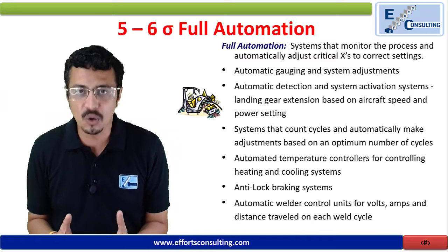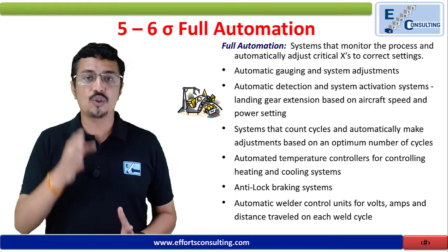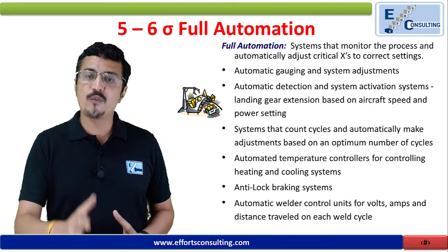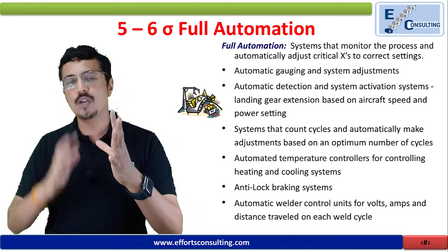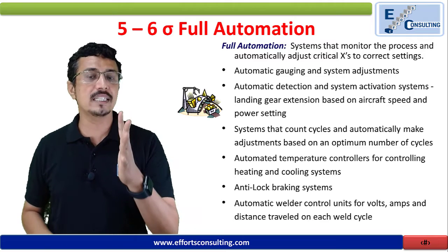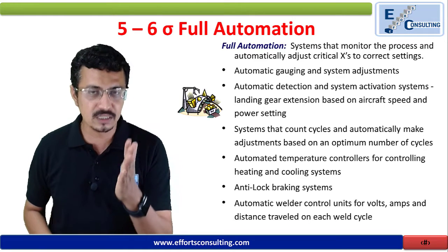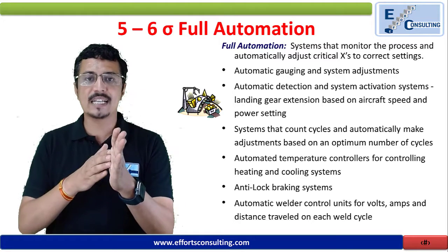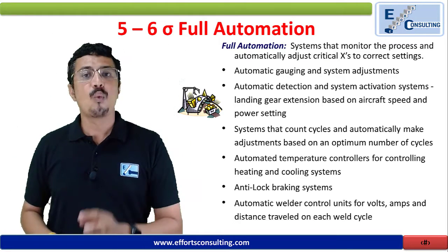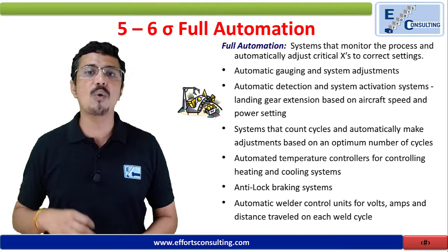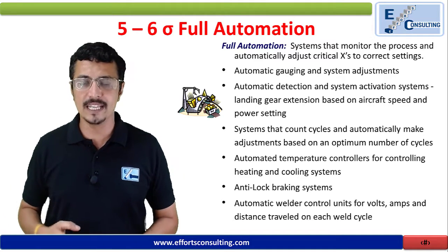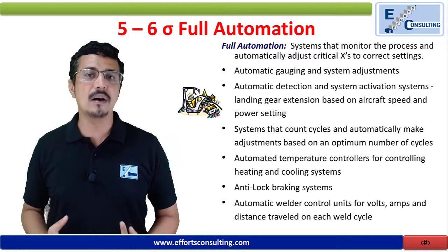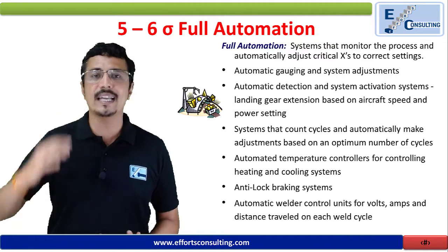Nothing is wrong with going for automation if you are doing mistake proofing. There is a difference between automation and poka-yoke or mistake proofing. Automation uses some external sources or systems to prevent defects and control the process, while mistake proofing is about making slight changes within the existing system without further investment to achieve a full-proof system.